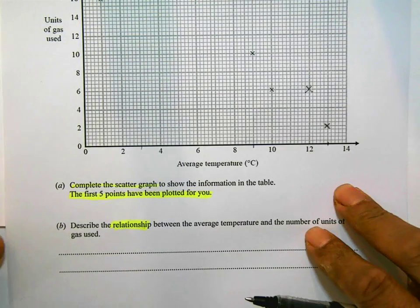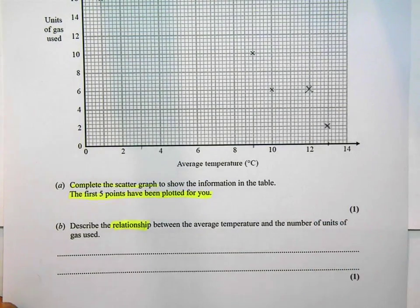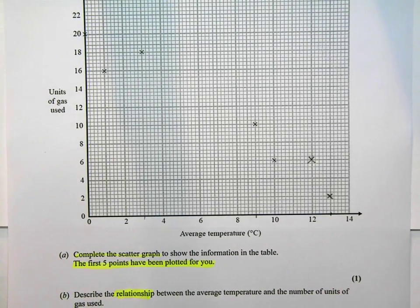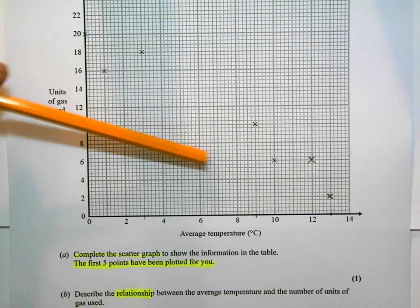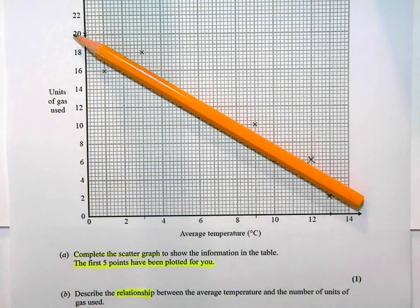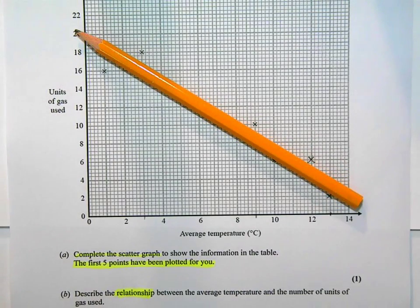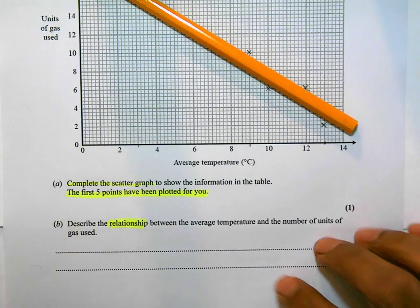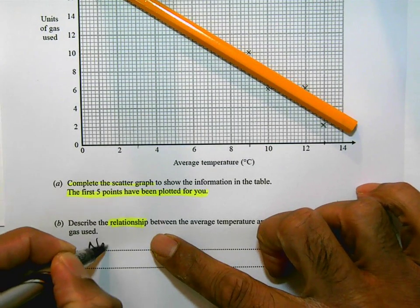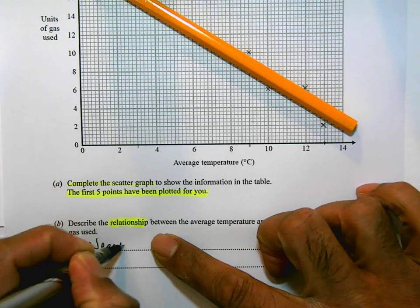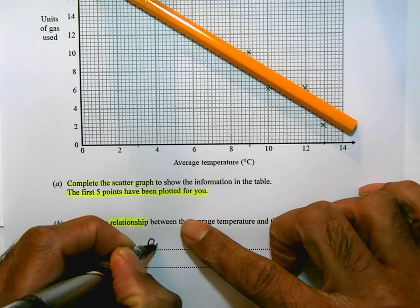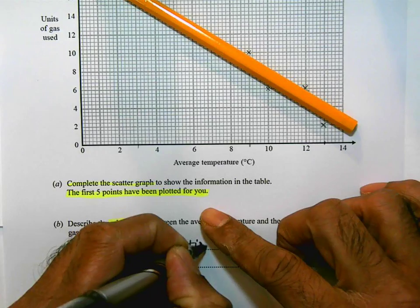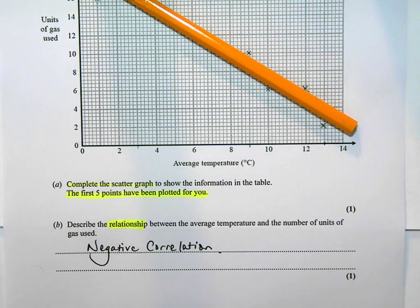What's the general trend? If I think about putting my pencil on the paper and look at the general trend, the general trend is heading downwards as you go from left to right. And that's a negative correlation. And that's what I'm just going to write into my answer space. So to describe the relationship, it's a negative correlation. And that's sufficient to pick up that mark as well.